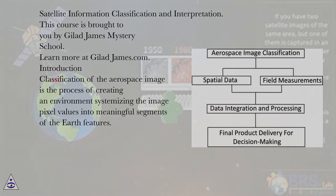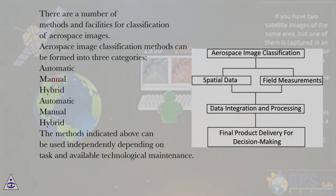Classification of the aerospace image is the process of creating an environment systemizing the image pixel values into meaningful segments of the Earth features. There are a number of methods and facilities for classification of aerospace images. Aerospace image classification methods can be formed into three categories.